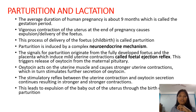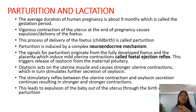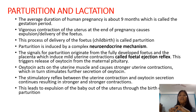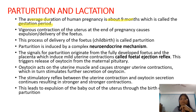Now we will talk about parturition and lactation — this is the last topic and will finish this chapter. You can rely on my notes as they are purely from NCERT. The average duration of human pregnancy is about 9 months, which is called the gestation period — meaning the period during which the child has not yet been born.